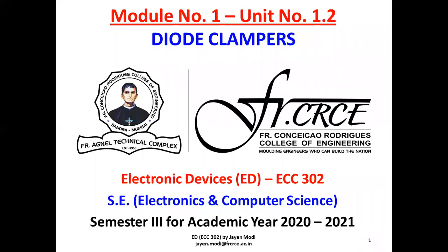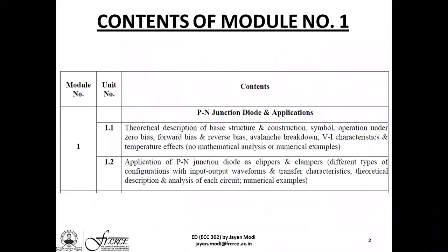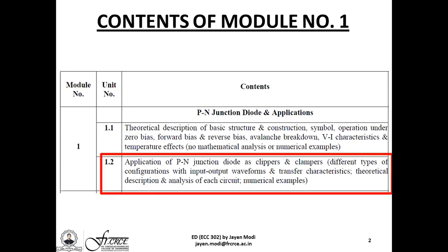The syllabus for module number 1 had two units: 1.1 and 1.2. We earlier covered unit 1.1, studying the PN junction diode structure, construction, symbol, operation under zero bias, forward bias, and reverse bias conditions, avalanche breakdown, characteristics, and temperature effects. We also looked at unit 1.2, which dealt with the application of a PN junction diode as a clipper circuit. In this video lecture session, we will be focusing on the second part: clampers.